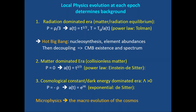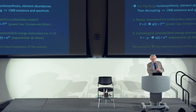After decoupling comes the matter-dominated era, with equation of state p = 0. Instead of expanding as t^(1/2), the universe expands as t^(2/3) — the Einstein-de Sitter universe. Eventually the cosmological constant or dark energy takes over, with equation of state p = −ρ, giving exponential expansion — the de Sitter universe. This shows that microphysics determines the macroevolution of the cosmos: whether p = ρ/3, p = 0, or p = −ρ gives entirely different expansions.